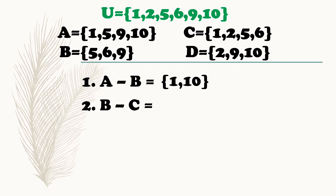Next, difference of set B and set C. Elements of set B: 5, 6, 9. Elements of set C: 1, 2, 5, 6. Ano yung elements na makikita kay C na meron din kay B? 5 at 6. Tingnan si set B. Pag tinanggal si 5 at 6, ano ang matitira? 9.